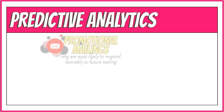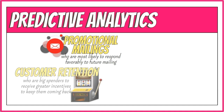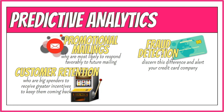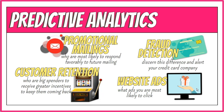Here are some real-life applications of predictive analytics. Data from past promotional mailings are used to identify prospects most likely to respond favorably to future mailings. By tracking player spending, casinos can learn which customers they make the most money from and offer greater incentives to keep big spenders coming back. Past data is used to detect fraudulent credit card transactions — if your card is stolen and used fraudulently, the usage often varies noticeably from your established pattern, and data mining tools can alert your credit card company. Based on your browsing history, websites predict which ads you will click so they can instantly choose which ad to show you.